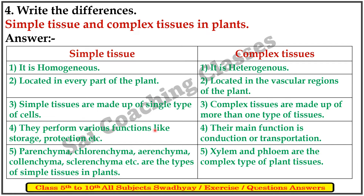Simple tissue performs various functions like storage, protection, etc. The main function of complex tissue is conduction and transportation. Types of simple tissue in plants include parenchyma, chlorenchyma, aerenchyma, collenchyma, sclerenchyma, etc. Xylem and phloem are the complex types of plant tissues.